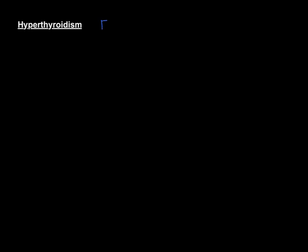Let me just remind you of the two things that we measure when analysing thyroid function. We measure fT4 in the bloodstream, and we also measure thyroid-stimulating hormone. The normal ranges for these are 9 to 18 picomolar for fT4, and 0.5 to 5 milli-international units per litre for thyroid-stimulating hormone.